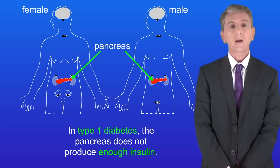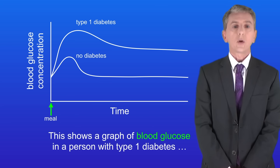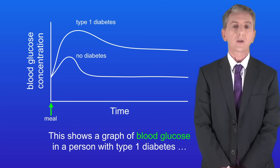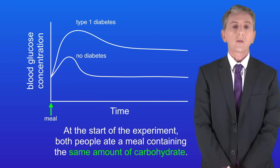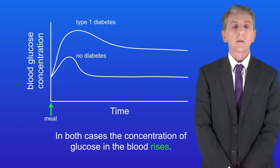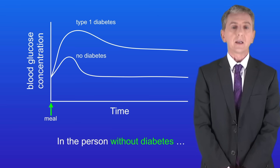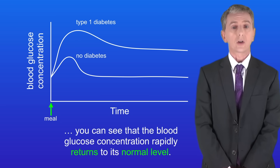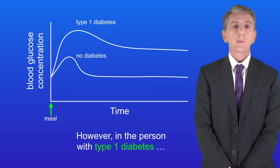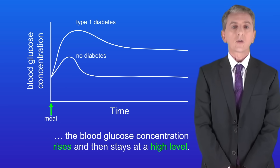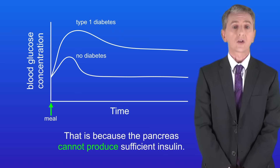In type 1 diabetes the pancreas does not produce enough insulin. Here is a graph of blood glucose in a person with type 1 diabetes and a person who does not have diabetes. At the start of the experiment both people ate a meal containing the same amount of carbohydrate. In both cases the concentration of glucose in the blood rises. In the person without diabetes the blood glucose concentration rapidly returns to its normal level due to the effect of insulin. However in the person with type 1 diabetes the blood glucose concentration rises and then stays at a high level because the pancreas cannot produce sufficient insulin.